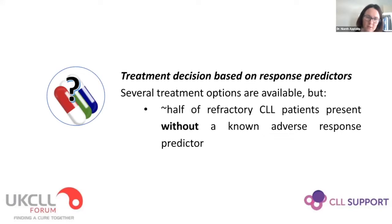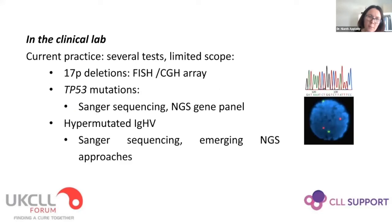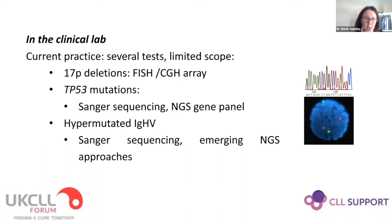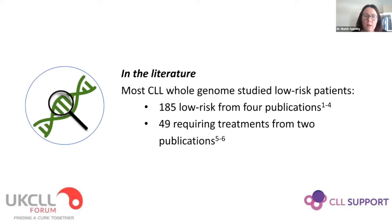At present, treatment decisions in CLL are based on response predictors — predominantly immunoglobulin heavy chain rearrangements and TP53 status. However, up to half of patients with refractory disease present without a known or obvious adverse risk factor. In clinical practice, we use different techniques: FISH or SNP array for deletions, Sanger or NGS gene panel for TP53 mutations, and Sanger or emerging NGS approaches for IGHV status. Most CLL whole genomes published so far have studied low-risk, treatment-naïve patients, with very few whole genomes from patients requiring treatment.